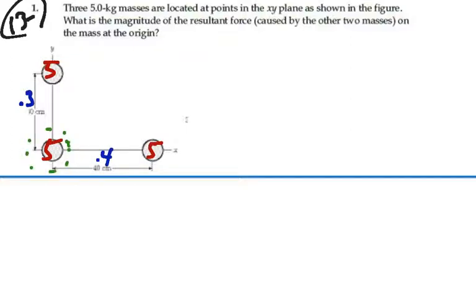There will be an attractive force to each of the other two masses. So it will feel a force of attraction, let's call it F1, to the top mass. And then it will feel a force of attraction, F2, to the mass to the right. Let's find the magnitude of these two forces and then add them together vectorially.